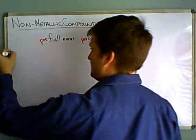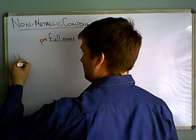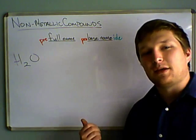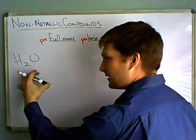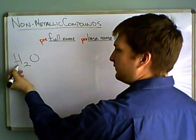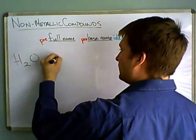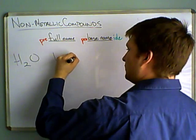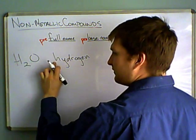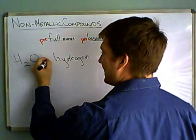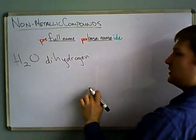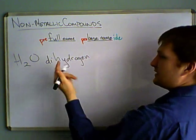So let's do a quick example. Let's say we have this. That's water. But how would we name it with this? Because we have two non-metals, right? So, okay, the first full name would be hydrogen. And since it's not a one, in the first one we have to put di here, because di is for two, so dihydrogen.